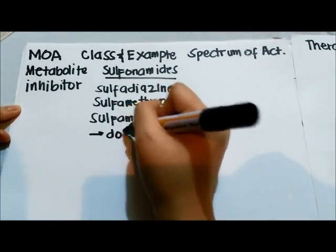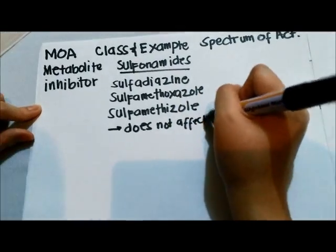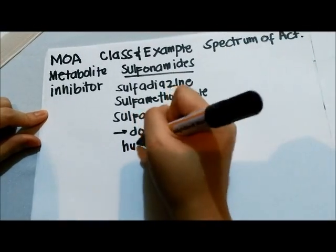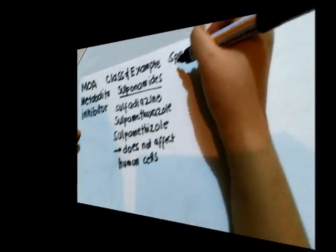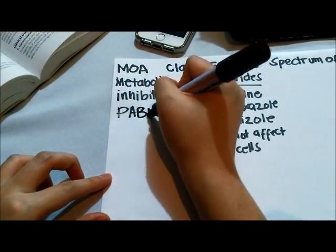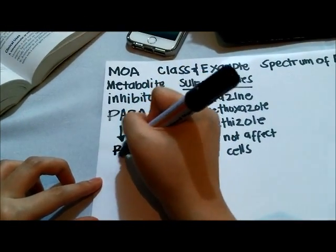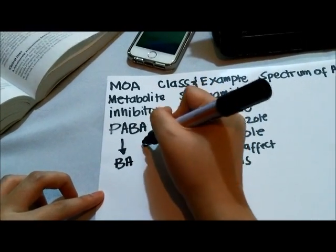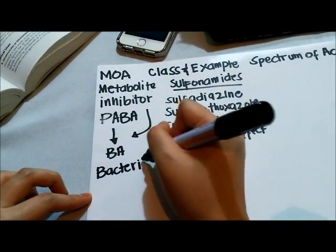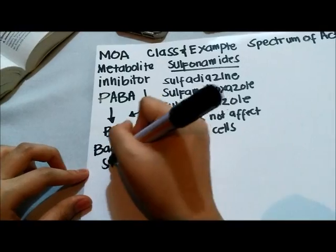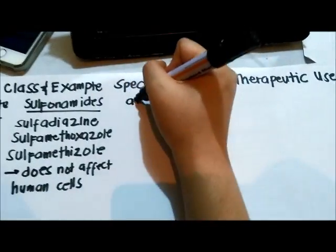The way they act as metabolite inhibitors is that they block the conversion of PABA. These drugs are bacteriostatic in nature, meaning they will halt bacterial growth but will not kill the bacteria. They are also only active against gram-positive bacteria.